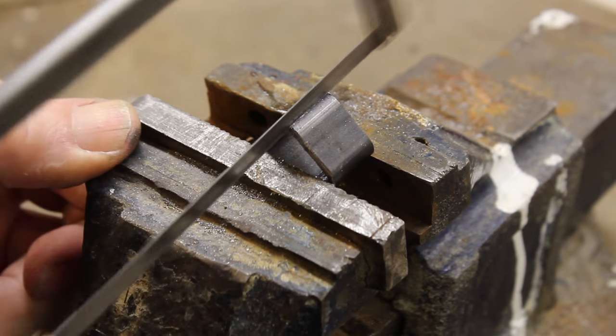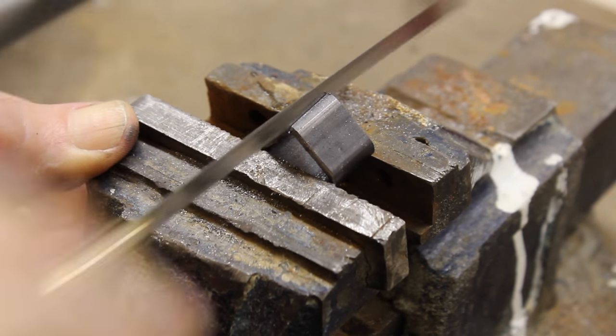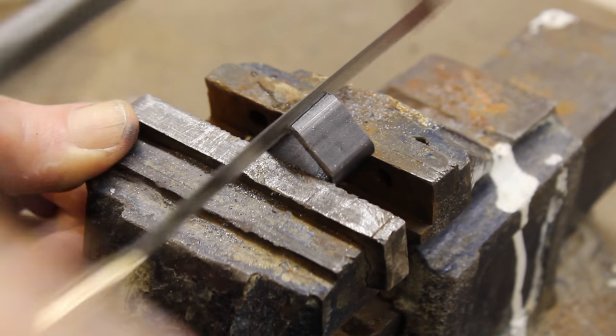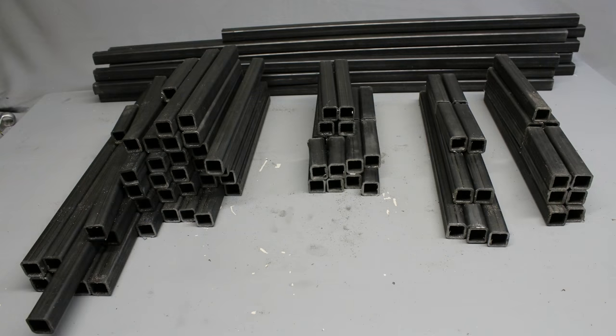A couple of angle joints is created by cutting short pieces of square tubes along two edges. After approximately 140 cuts, the mountain of iron looks like that.